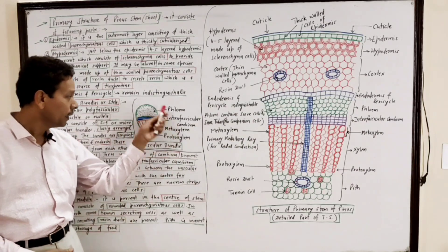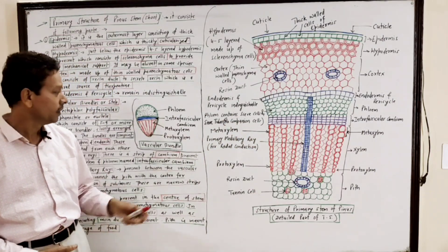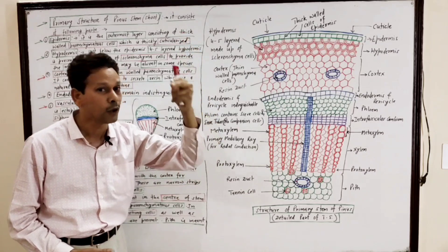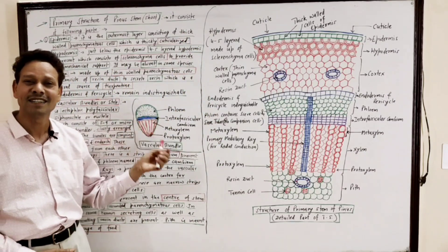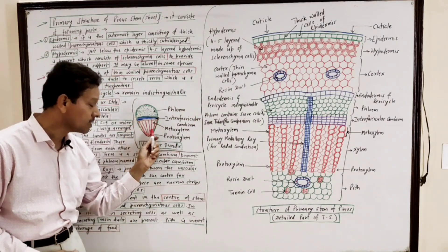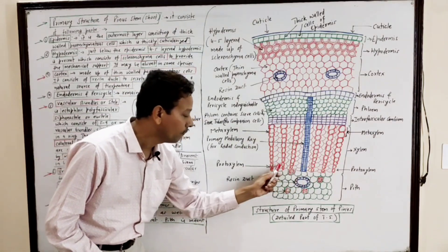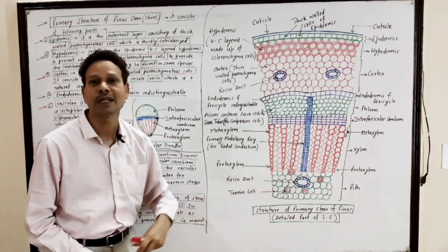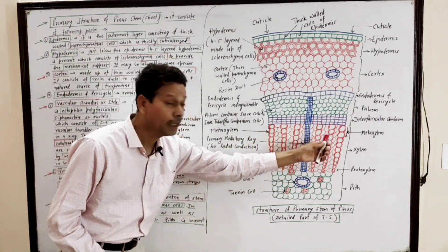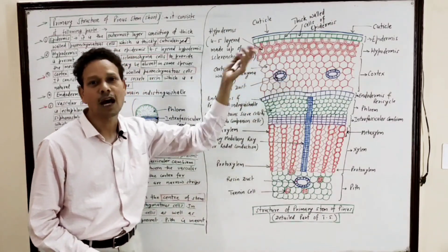It is open type. It is conjoint, because both xylem and phloem are present. It is collateral — both xylem and phloem are present on the same radius. And dear students, this vascular bundle is endarch, because in the xylem, the protoxylem — the first-formed xylem — faces towards the center. So it is endarch. And the metaxylem, the late-developed xylem, faces outwardly.